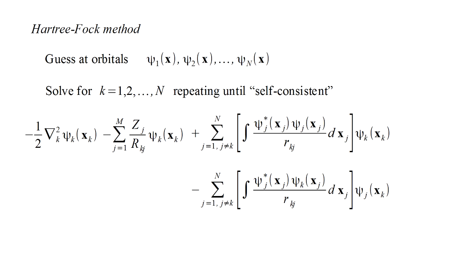These correspond to the sum of kinetic and potential energy terms in the Schrödinger equation, and this is set equal to a total energy term, e k times psi k.